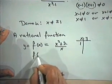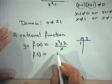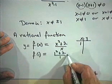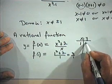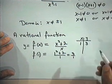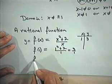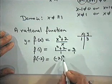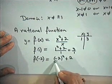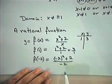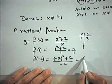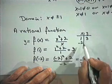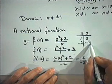If x equals 1, we find f(1) by replacing x with 1 everywhere: 1 squared plus 2 divided by 1, which gives us 3 over 1, or simply 3. So when x equals 1, the value of the function is 3. For f(negative 2), we plug in negative 2: negative 2 squared plus 2 divided by negative 2. Negative 2 squared is 4; 4 plus 2 is 6; 6 divided by negative 2 gives us negative 3. So when x equals negative 2, the function value is negative 3.